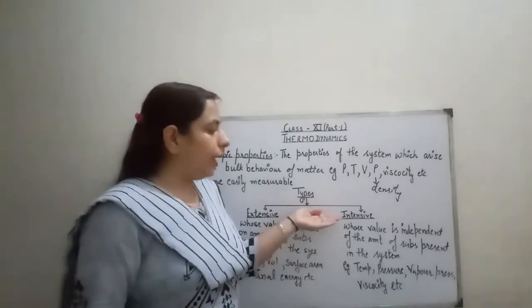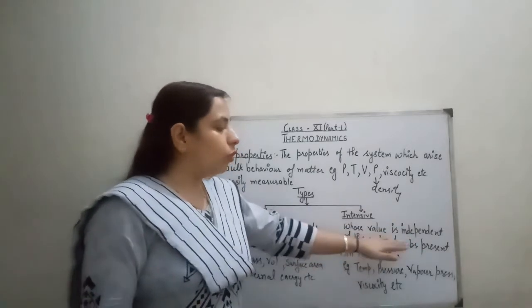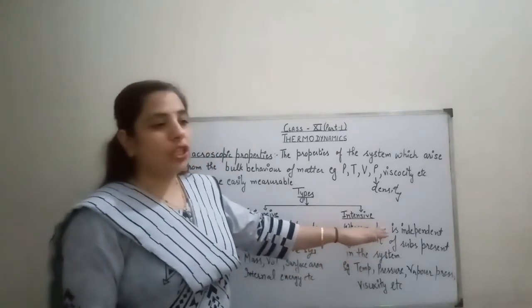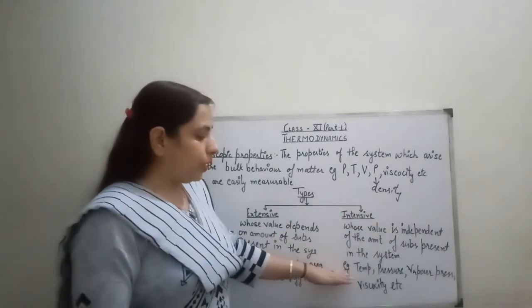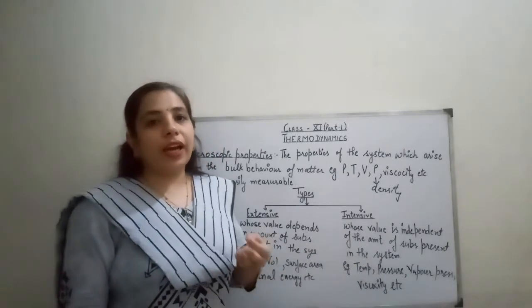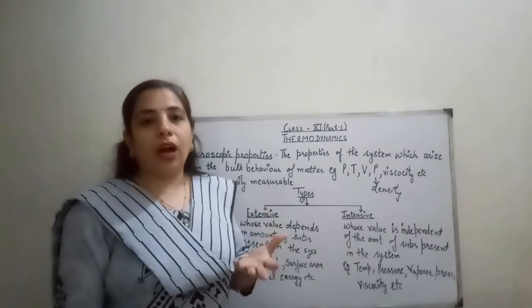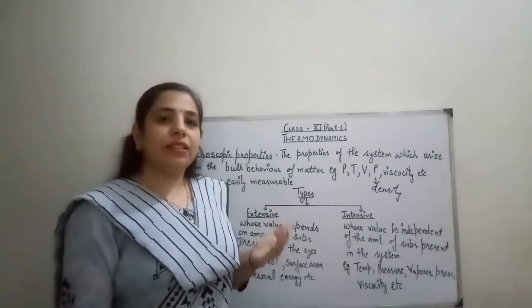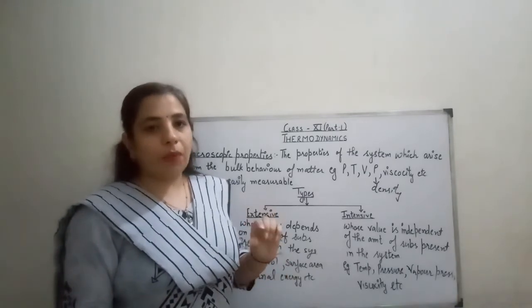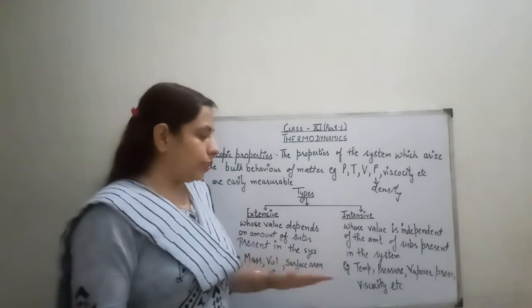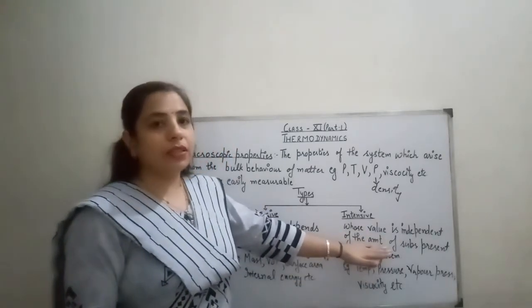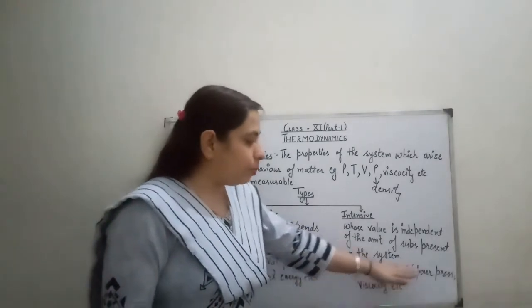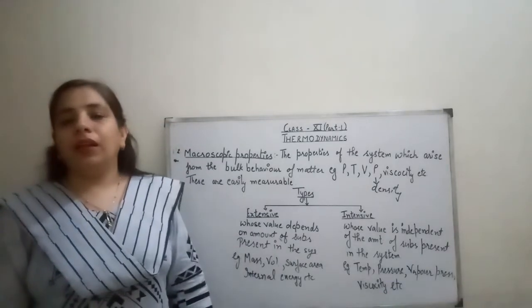Intensive properties are those which are independent of the amount of substance present in the system. For example, the freezing point of water is 0°C — whether there is a little water or a lot of water, it freezes at 0°C. So temperature is independent of how much substance is present. Properties like temperature, pressure, vapor pressure, viscosity, etc. are known as intensive properties.